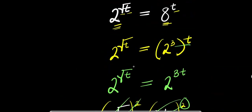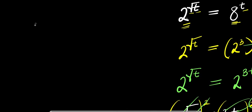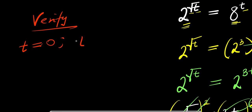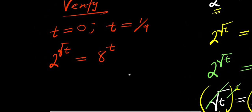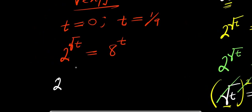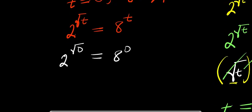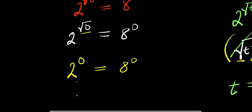Let's verify both solutions. We have 2 power square root of t equals 8 power t. Starting with t equals zero: we have 2 power square root of zero equals 8 power zero. Square root of zero is zero, so we get 2 power zero equals 8 power zero. Any number raised to the power of zero is 1, so this gives 1 equals 1. Therefore t equals zero is correct.